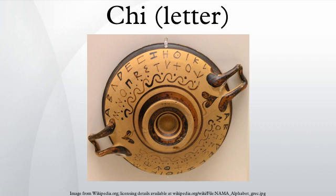In algebraic topology, chi is used to represent the Euler characteristic of a surface. In neurology, the optic chiasm is named for the letter Chi because of its X-shape. In chemistry, the mole fraction and electronegativity may be denoted by the lowercase chi. In rhetoric, both chiastic structure and the figure of speech chiasmus derive their names from the shape of the letter Chi.